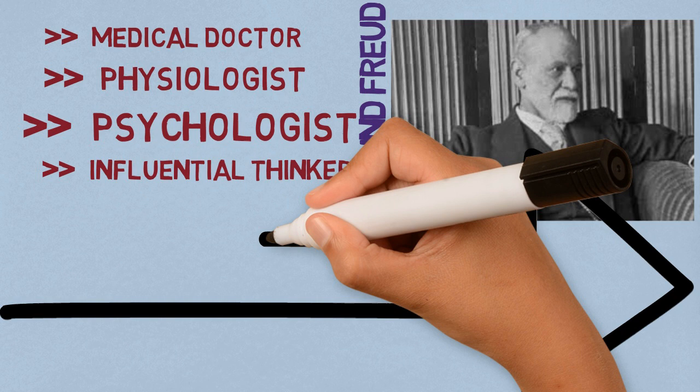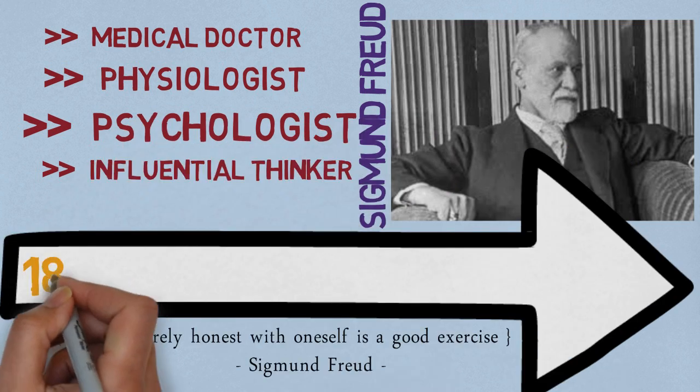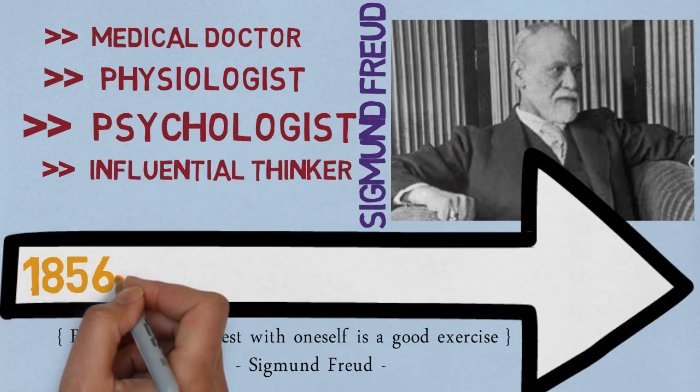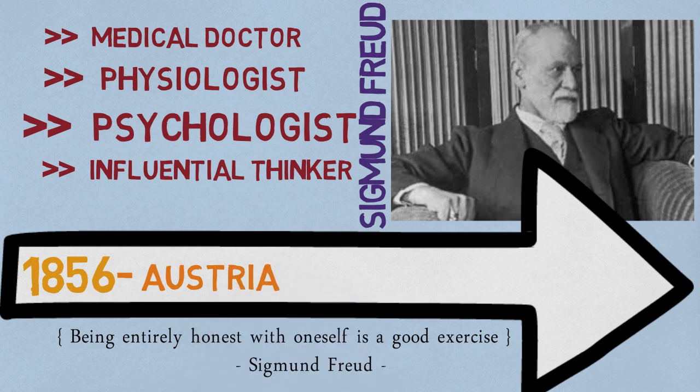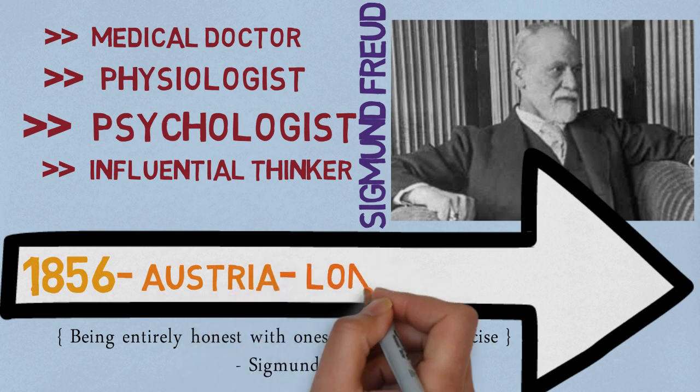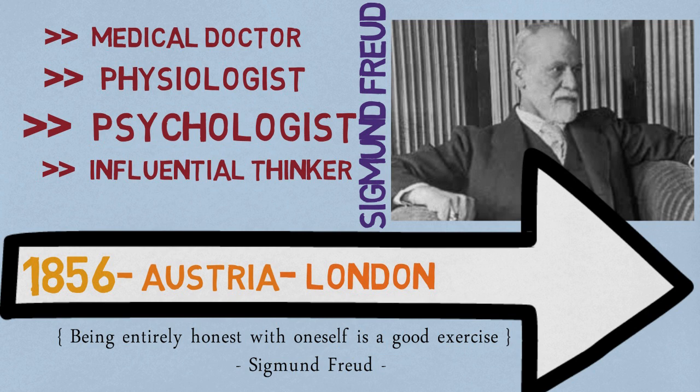Some biographical information. He was born in 1856. He spent most of his life in Vienna, Austria, but he escaped to London soon after the Nazis began to occupy where he lived at the beginning of World War II, and he died in London.